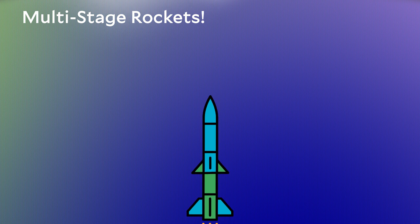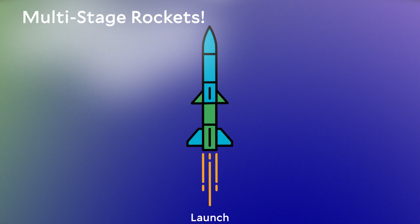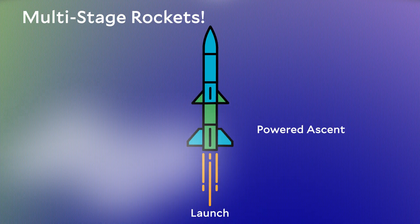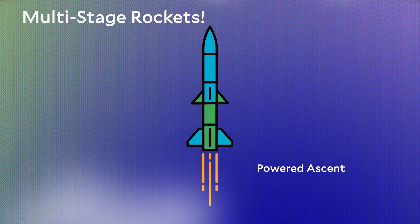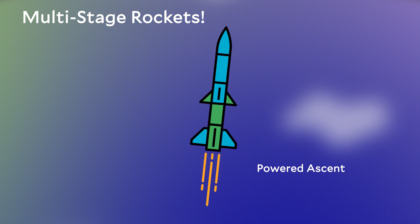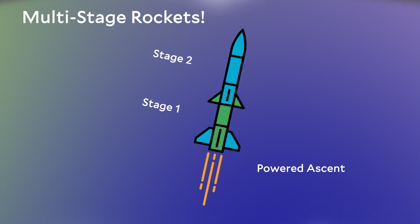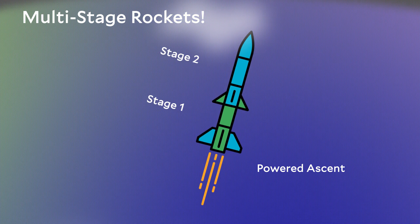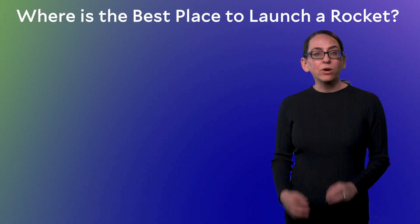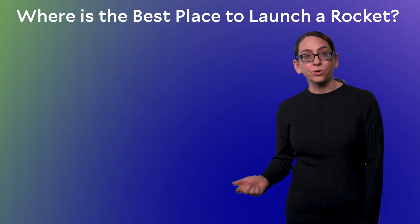But with each additional rocket stage, there is increased risk of failure, and most rockets launch with between two and four stages. The last place we can squeeze a little bit more delta-v is to consider where on Earth to launch a satellite into orbit.